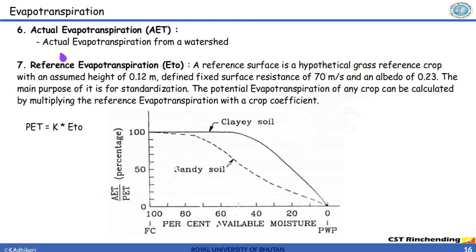Along with this there are two other terms which are actual evapotranspiration and reference evapotranspiration. Actual evapotranspiration as the name suggests is the actual value of evapotranspiration which is going to be slightly less than the potential evapotranspiration, and there is reference evapotranspiration.